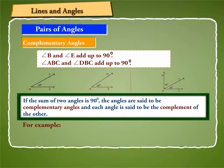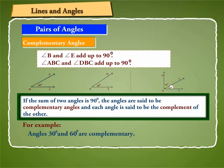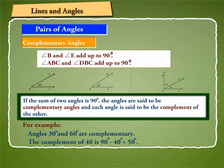For example, angles 30 degrees and 60 degrees are complementary. The complement of 40 degrees is 90 degrees minus 40 degrees, or 50 degrees.